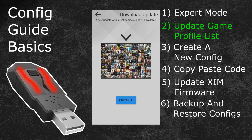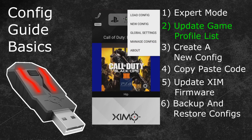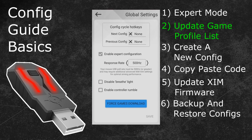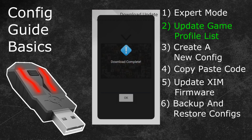If your Zim doesn't show you the update notification, but you would still like to double check and download the latest game profiles, you can do the following. Click on the options button in the top right of your Zim manager, then proceed to the global settings. At the bottom of the global settings you can find the Force Games Download button. By pressing that button your Zim will download not only the latest game profiles, but also all other game profiles with their latest versions — a great way to make sure everything is current.